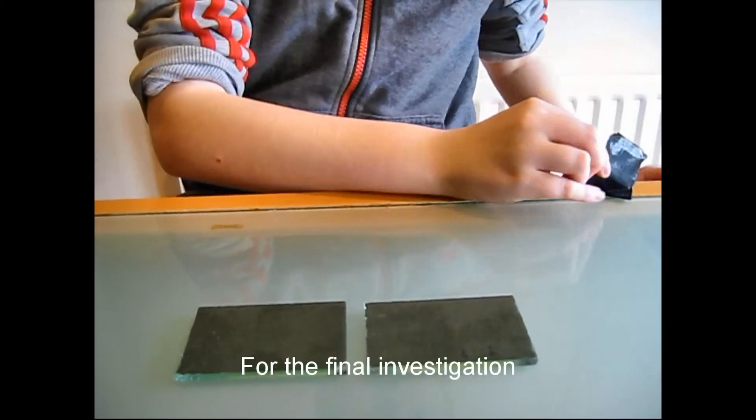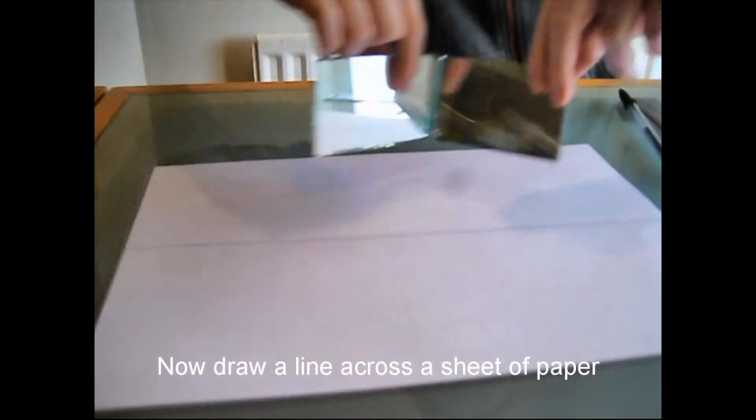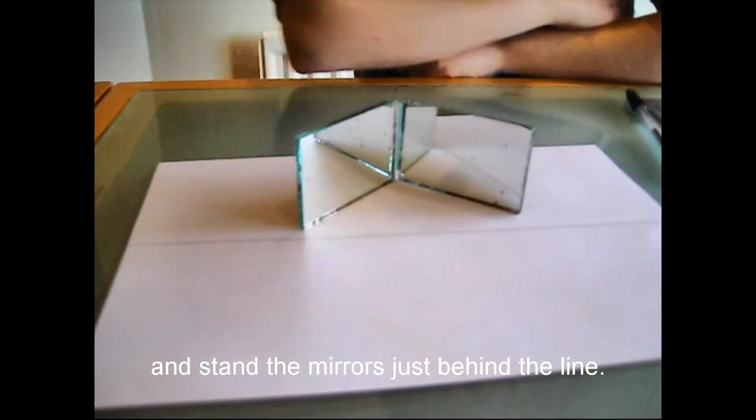For the final investigation, tape the two flat mirrors together again at the back. Now draw a line across a sheet of paper and stand the mirrors just behind the line.